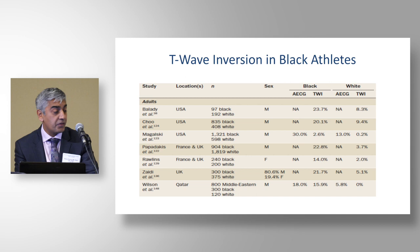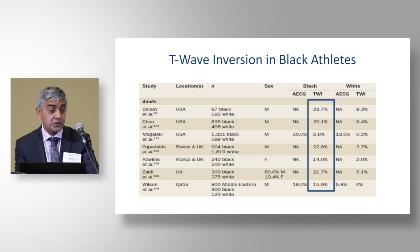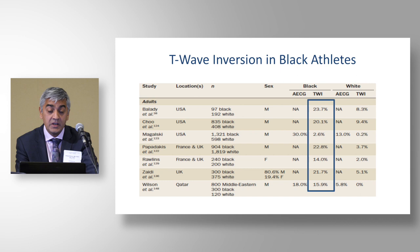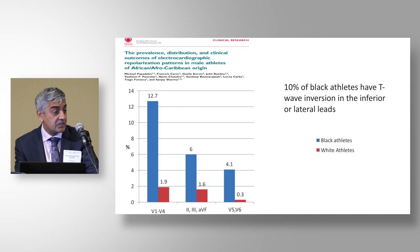This finding is not unique to Europe — T-wave inversion is more prevalent in black athletes than white athletes globally. A few studies from the US suggest the prevalence of deep T-wave inversion may be lower in African-American individuals than in Afro-Caribbean individuals seen in Europe, so it's important not to lump all black individuals in the same category.